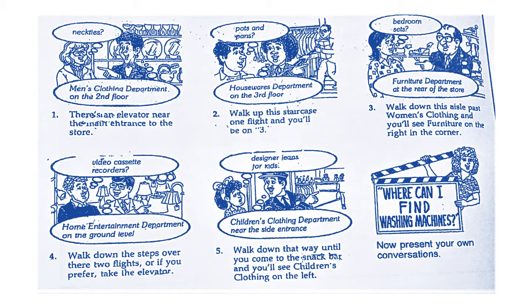ممكن تعمل الحوار A و B — يعني: 'Excuse me' أو 'Pardon me, where can I find...?' — طلب شيء معين. طبعاً 'Excuse me, pardon me, where can I find...?' Exercise Number Two — here we have: